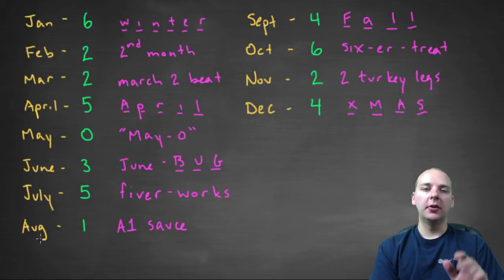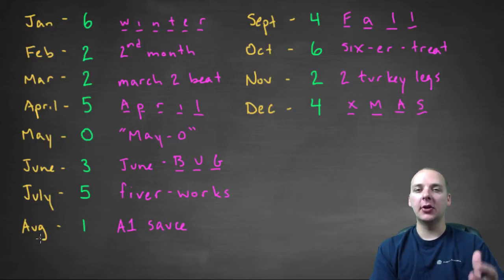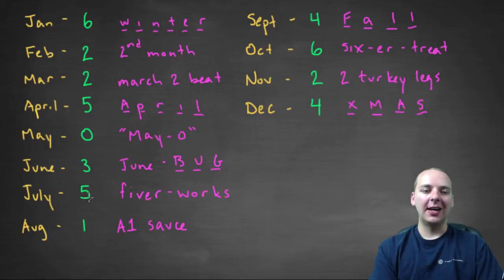August, think of the little mnemonic A1, like A1 steak sauce that you would put on a nice steak that you would grill. September, you can think of the number 4 for fall, F-A-L-L, only has 4 letters.